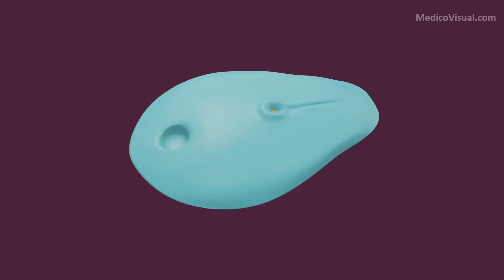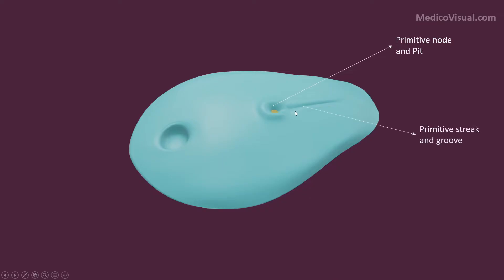This is the embryo at the start of the third week of development and you are looking at it from the top. Here is the epiblast layer or ectodermal layer of the embryo. This is the primitive node — this swelling is called the primitive node — and there is a circular depression within its center called the primitive pit. This is the primitive streak, and as cells ingress downward from its midline there is a depression formed called the primitive groove, which continues cranially with the primitive pit.